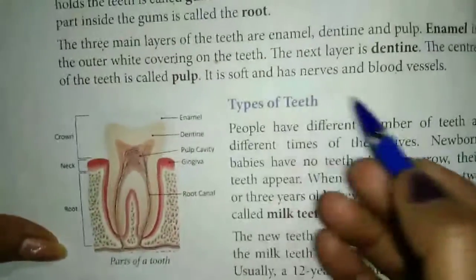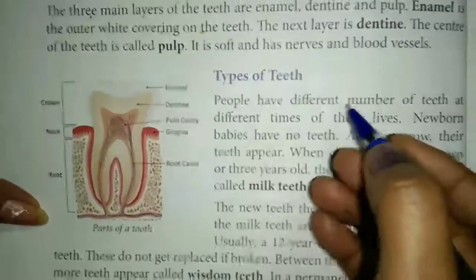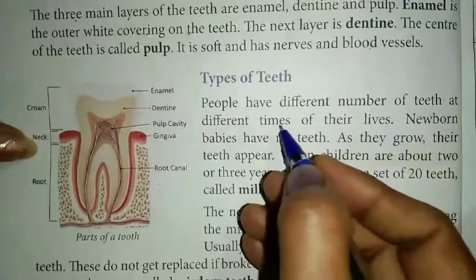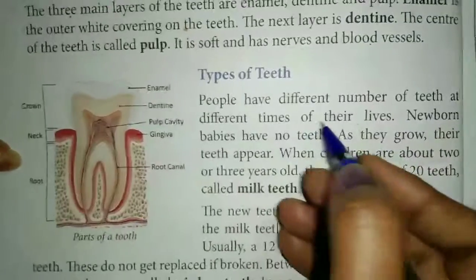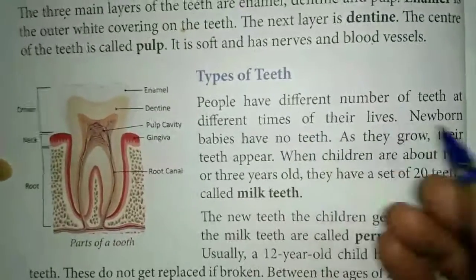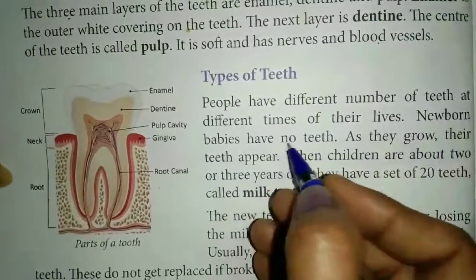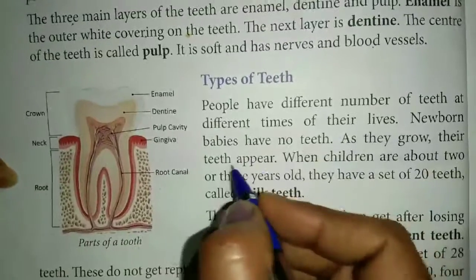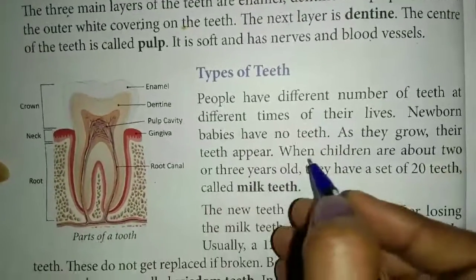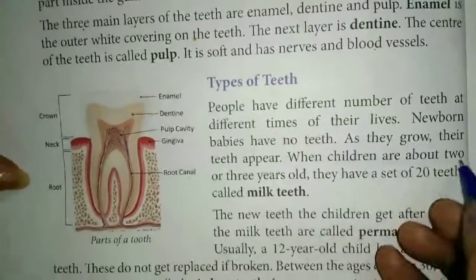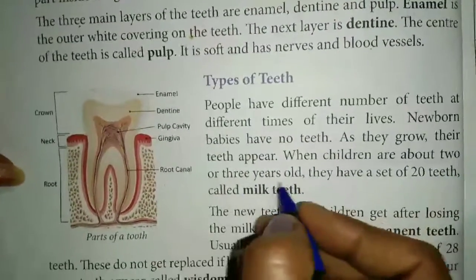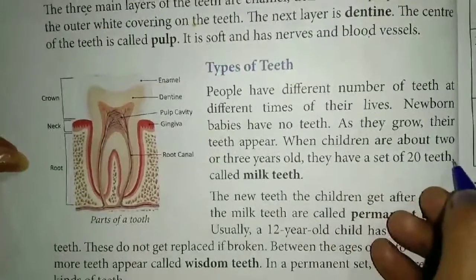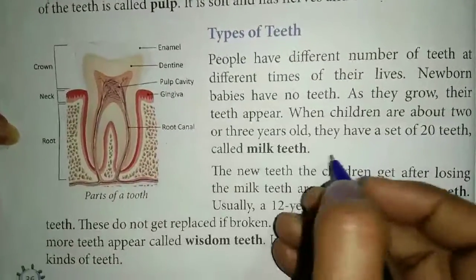Types of teeth. People have different numbers of teeth at different times of their lives. New born babies have no teeth. As they grow, their teeth appear. When children are about 2 or 3 years old, they have a set of 20 teeth called milk teeth.